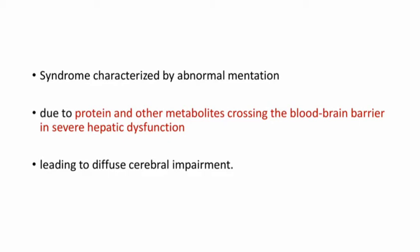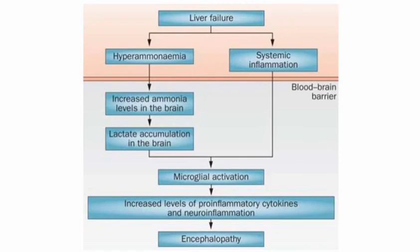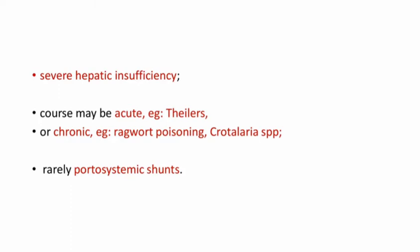This is the pathophysiology of hepatoencephalopathy. When there is liver failure, it leads to accumulation of ammonia in the blood — that is, hyperammonemia — in systemic circulation. This high concentration of ammonia crosses the blood-brain barrier, increasing ammonia levels in the brain. There will be lactate accumulation in the brain, and both systemic inflammation and lactate accumulation cause microglial activation, increased pro-inflammatory cytokines, neuroinflammation, and eventually encephalopathy. This condition is usually caused by severe hepatic insufficiency — acutely as seen in Theiler's disease, or chronically seen in ragwort or Crotalaria poisoning, and rarely portosystemic shunts.